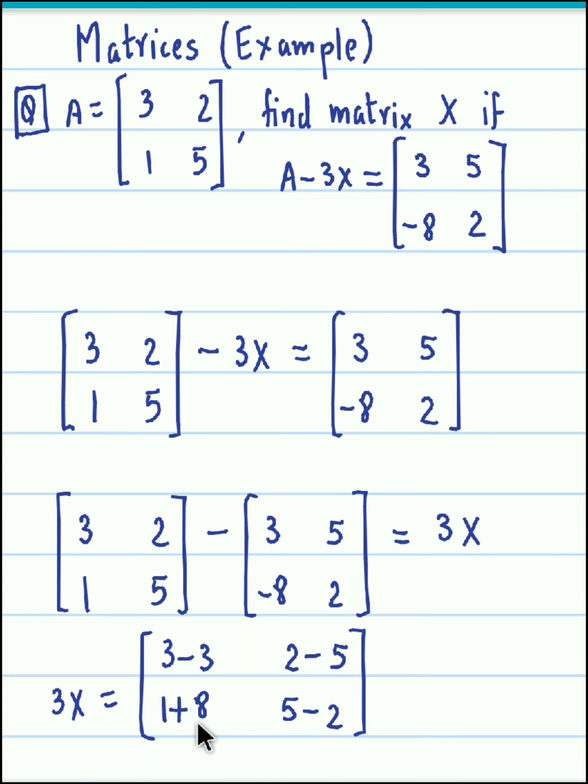Now if we perform these subtractions we'll obtain 0, minus 3, 9, and 3. Okay, so let's proceed further. So we get 3X is equal to, now the matrix X after subtraction becomes we have the elements 0, negative 3, 9, and 3.